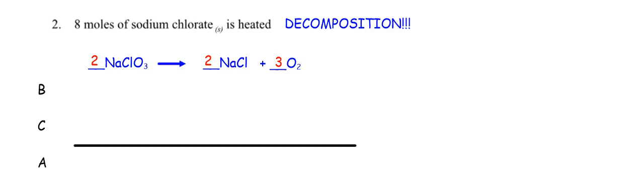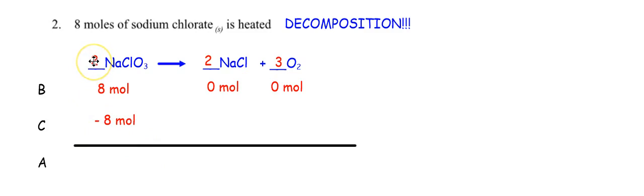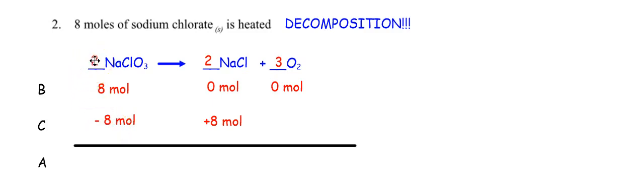Let's fill in what I know. I have eight moles of sodium chlorate. How many moles of sodium chloride and oxygen do I start with? Remember — if it's a product, you start with none. They haven't been made yet. So the only thing I can do is bring down the eight with a negative. What's eight divided by two? Four. Four times two is eight — plus eight for NaCl. Eight divided by two is four; four times three is twelve — plus twelve for O₂.